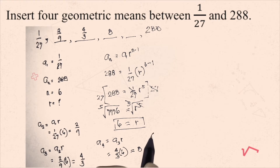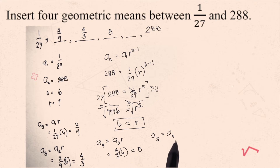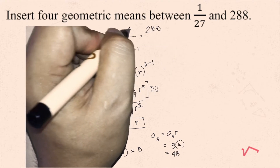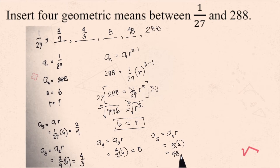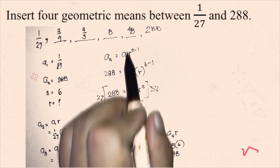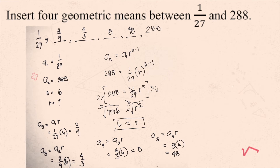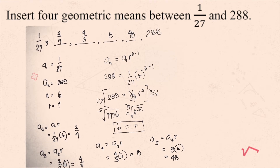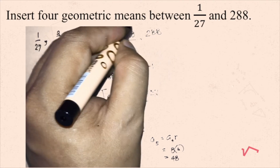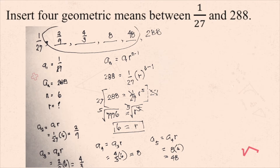The fifth term is 8 times 6, which equals 48. To check, multiply 48 by 6 — the answer must be 288. Indeed, 48 times 6 is 288, confirming it's correct. So these are the four geometric means: 2/9, 4/3, 8, and 48.